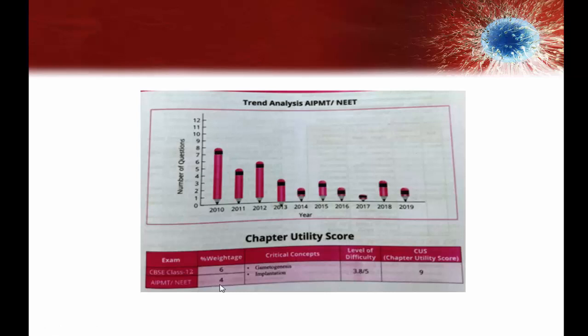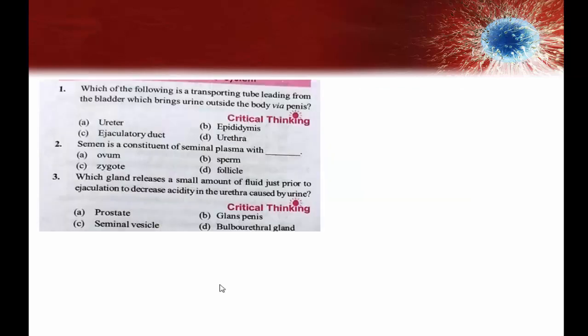Here is the first question: which of the following is the transporting tube leading from the bladder which brings urine outside the body via the penis?